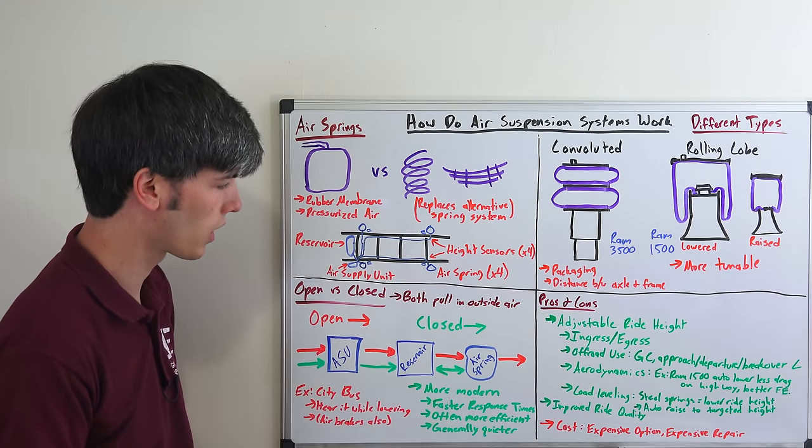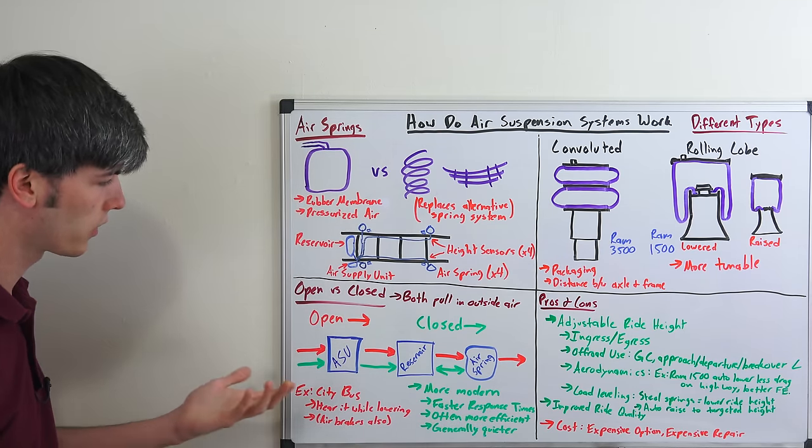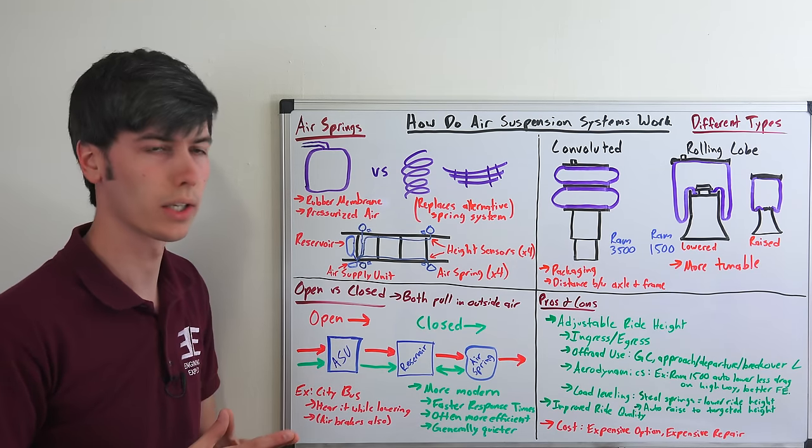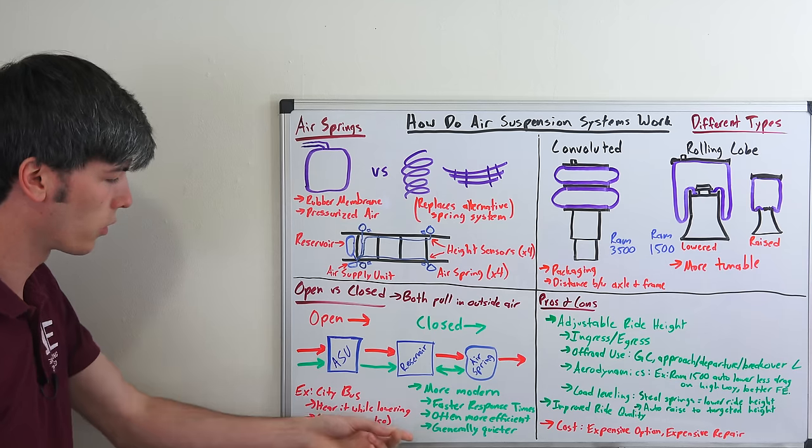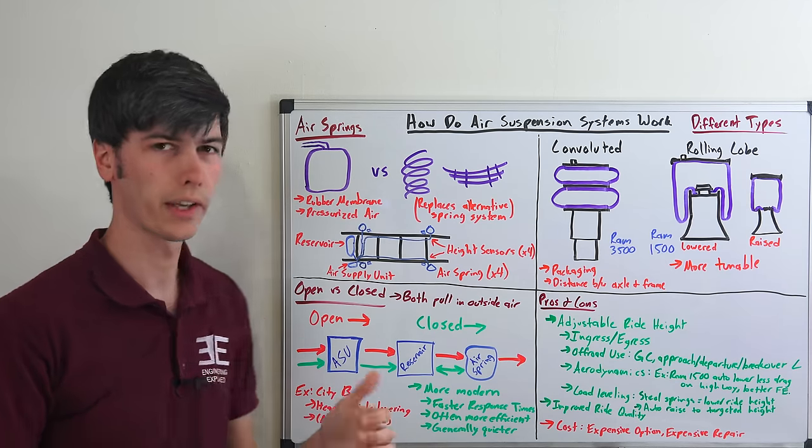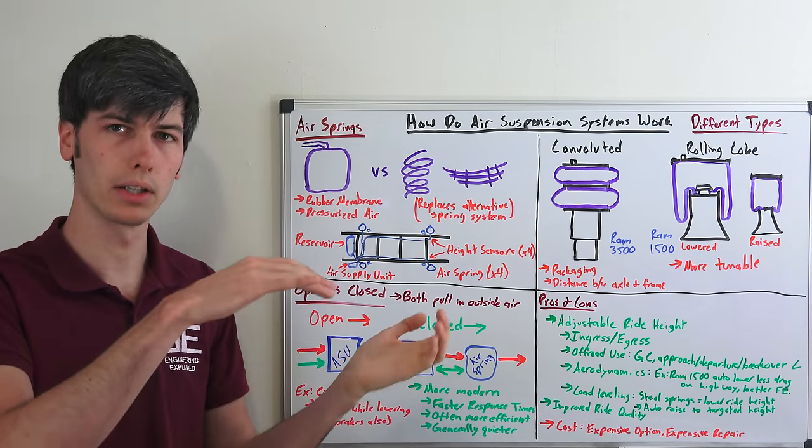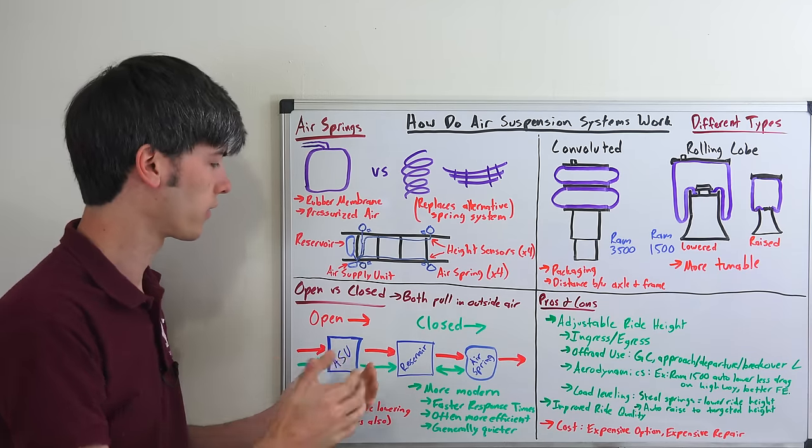There are some good advantages to using a closed air spring system. Basically you're going to have faster response times. Often it's going to be more efficient and it's generally quieter. And I bring up the noise level. You may often hear this with like a city bus and as it comes to pick people up it'll lower. You'll hear that air released as it lowers. That's an open system.